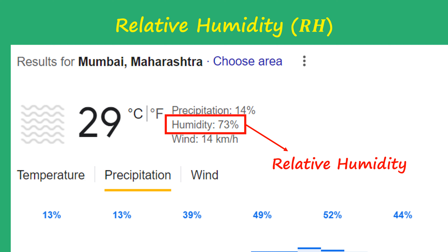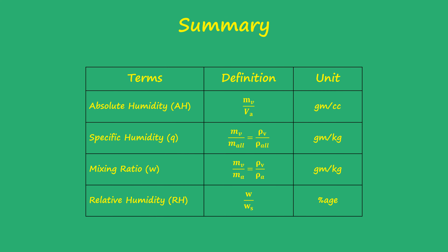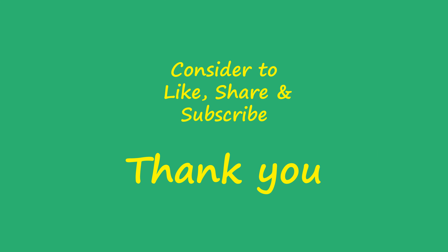Now that we've covered this, let's summarize today's tutorial. This table summarizes everything we've covered: the first column lists the different ways humidity can be defined, the second column shows the mathematical formulas for each definition, and the third column indicates the units in which these quantities are measured. I hope you found this tutorial helpful. If you did, please consider liking, sharing, and subscribing to the channel. Thank you for watching, and I'll see you next time.